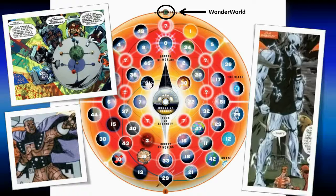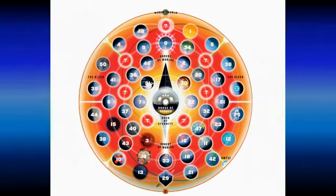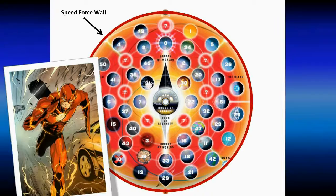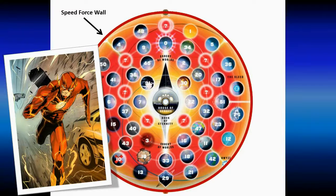Surrounding the Bleed is the Speed Force Wall, also known as the Speed of Light. Here is where the Flash gets his powers from, and it acts as a barrier between the physical realm of the Ori of Worlds and the metaphysical realm of the gods.